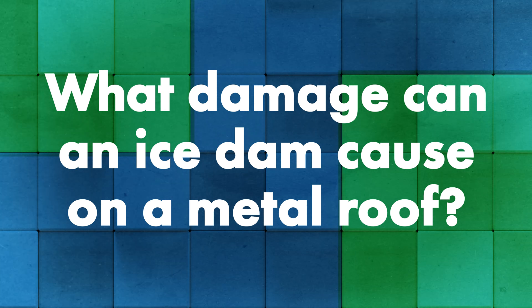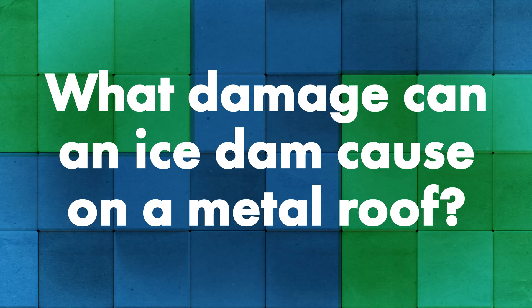So what damage could an ice dam actually cause to a metal roofing system? Depending on how extreme it is, it can cause massive amounts of ice in your gutter, which can pop your gutter or cause it to fall entirely. Water is very heavy, and ice just sits there and builds up. If it drops your gutters, it's going to tear up your fascia — and that can happen even without gutters if there's ice on the fascia.